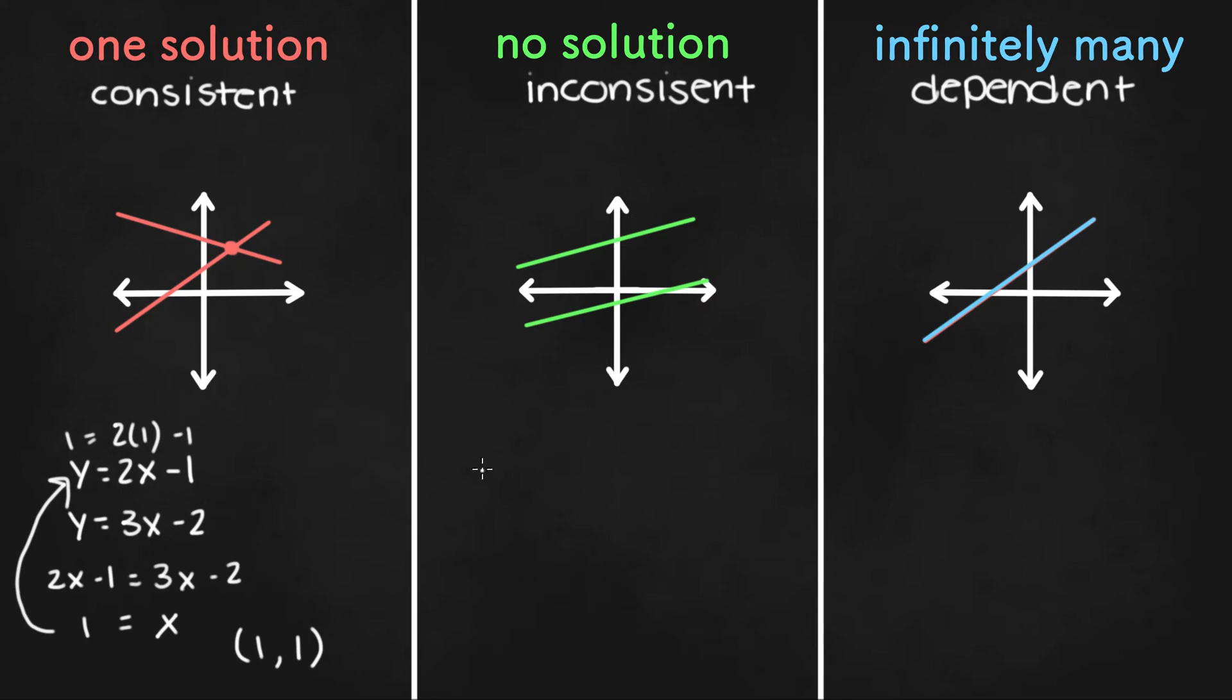Now, a system of equations with no solution would be something like y equals 2x minus 1 and y equals 2x plus 1. First of all, by looking at it, you can tell, since both of the equations are in slope-intercept form, that they have the same slopes. But if we were to solve it, we would have 2x minus 1 equals 2x plus 1. Since we're setting both of the equations equal to each other, we can subtract 2x from both sides. And we're left with negative 1 equals 1, which is not true. So if you get an equation that is not true, it's no solution.